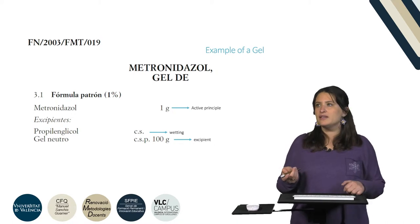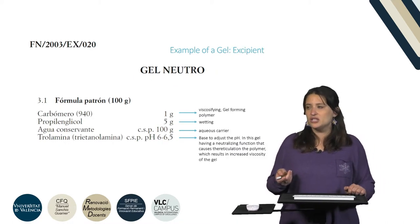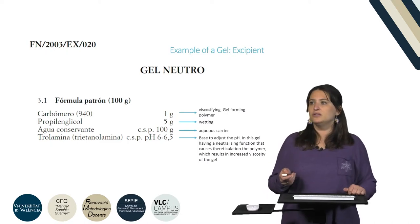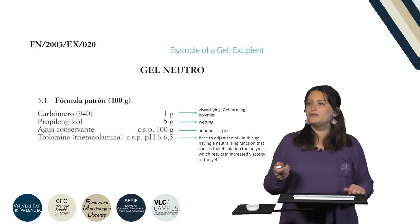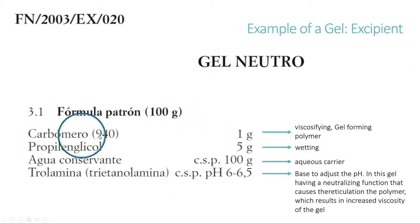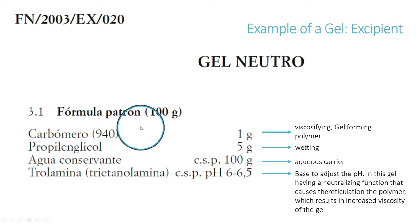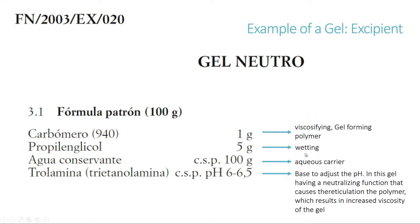We have to go back to the national formulary excipient section to see how to prepare the neutral gel. The formula for 100 grams contains carbopol 940, propylene glycol, conservant, water, and triethanolamine to achieve a final pH of 6 to 6.5. Carbopol 940 is the gel-forming polymer or cross-linking agent, propylene glycol is the wetting agent, water is the aqueous carrier, and triethanolamine is used to adjust the pH to produce the cross-linking of carbopol.